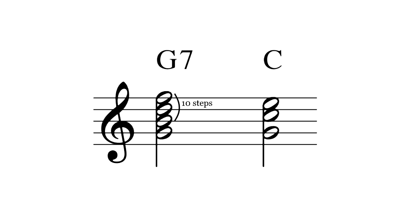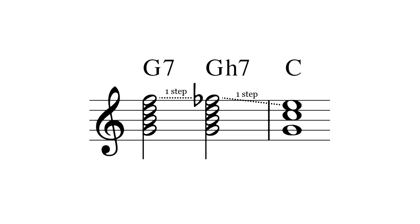Since the 7th of the starting chord is the 3rd of the tritone sub, moving the 7th of the starting chord moves the 3rd of the tritone sub, which thus moves the root. If you take the progression from earlier and replace the dominant chords with their tritone subs, you get this equivalent progression.